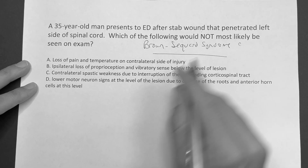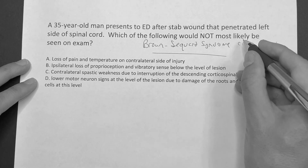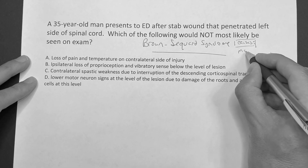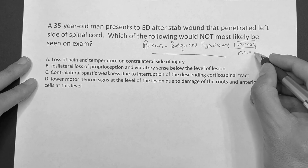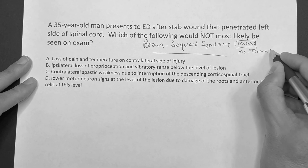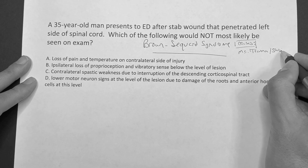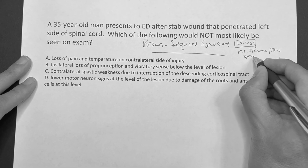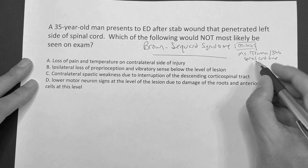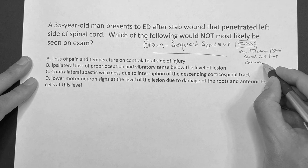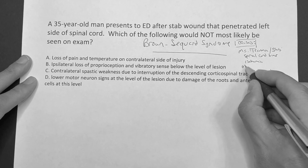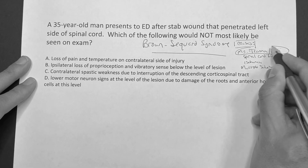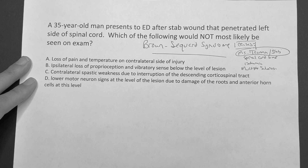Once you get the mechanism down, you can answer any question they give you. The causes: the most common cause, and what you'll likely see on step exams, is going to be some type of trauma — a stab wound, a gunshot — something that affects one side of the spinal cord. You could also have a spinal cord tumor, ischemia from blocked blood vessels, or multiple sclerosis. But typically the one seen on questions is trauma.